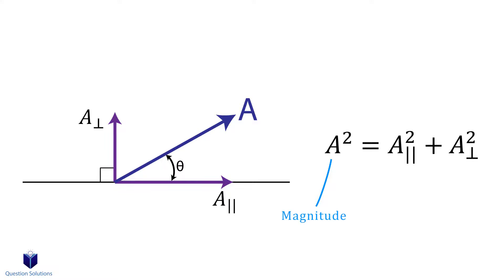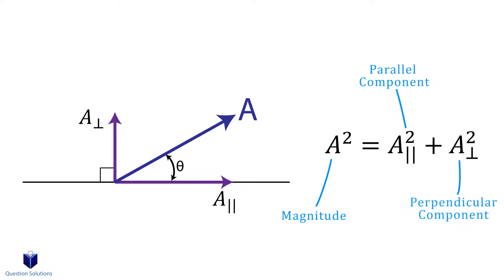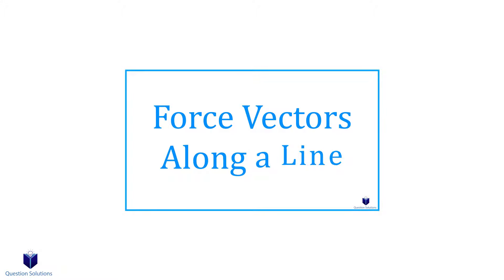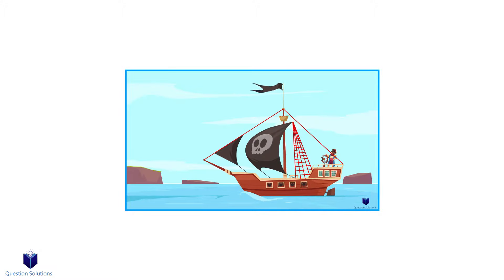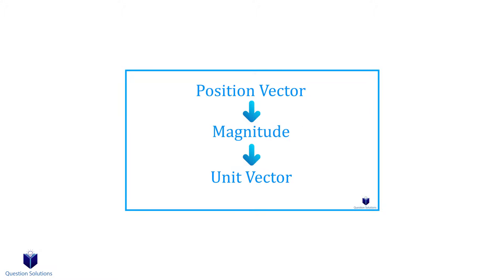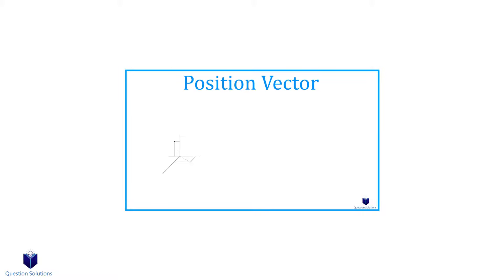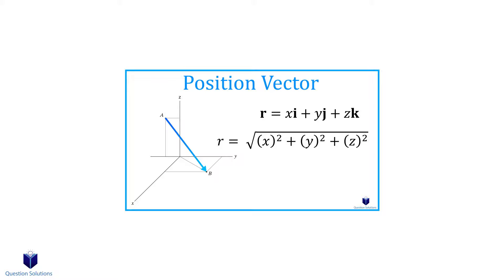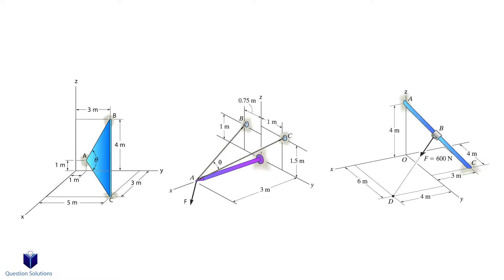Here, this is the magnitude of the force, this is the parallel component, and this is the perpendicular component. This will become much more clear with examples, but to do so, you should be able to express forces in Cartesian form and be able to write position vectors along with unit vectors. In the previous video, I go through this step by step, so if you need a refresh or you forgot, please check the description. Now let's move on to some examples and see how we can find angles, projections, and more.